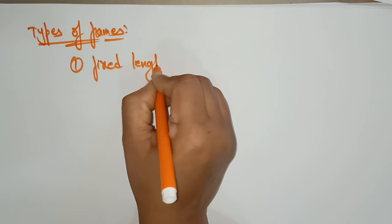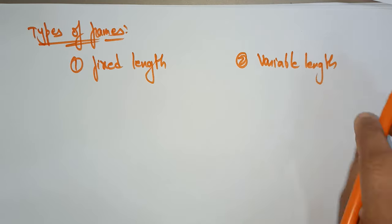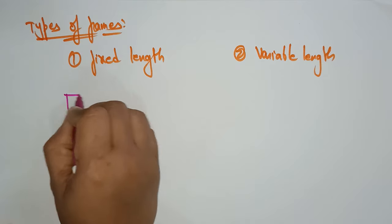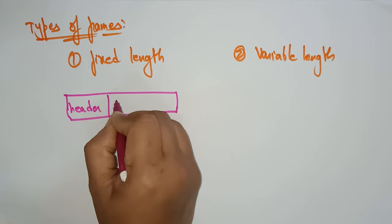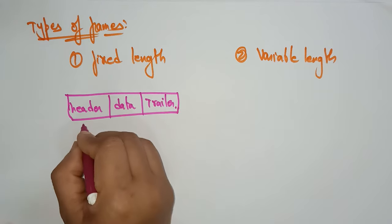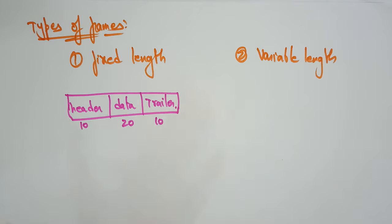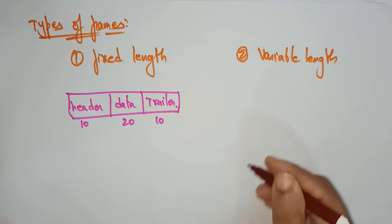Fixed length means all the bits should be fixed. A frame consists of header, data, and trailer. The bits are fixed — suppose the header consists of 10 bits, data is 20 bits, and trailer is 10 bits. These bit counts will be fixed for every frame. Any number of frames there are, for each frame these bits should be fixed. The size of the header, data, and trailer are fixed.